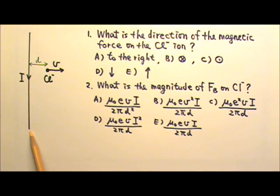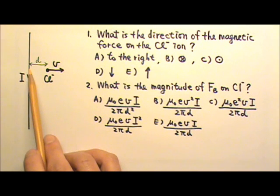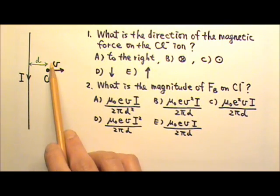A long straight current I is in the plane of the page. There is a chloride negative 1 ion nearby. At this particular moment, the ion is a distance d from the current and is moving to the right away from the current at speed v.